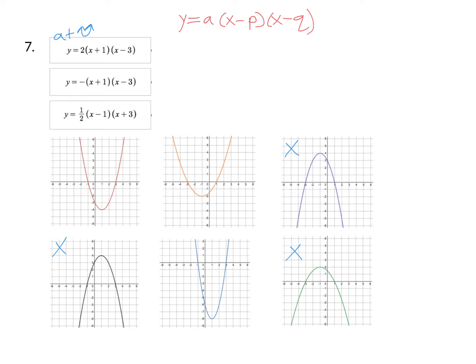And to do that you're just going to take each factor and set it equal to zero. x plus one equals zero. Subtract one and we get negative one. And then do the other factor and set it to zero. x minus three equals zero. If we add three on each side we get x equals three. So the x intercepts need to be at negative one and positive three.